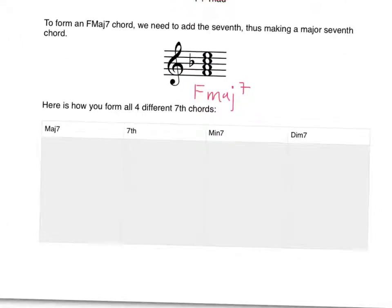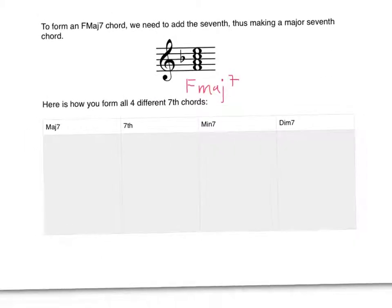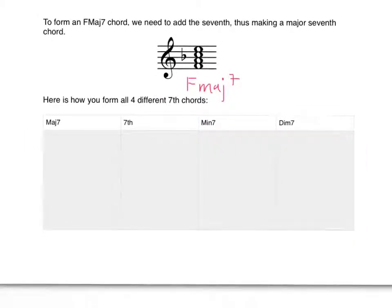There are four different seventh chords that we're talking about here. The first kind is the major seven, which is basically just the major triad. This one isn't called a major seven - this is called the seventh chord. So what you do here is you still have a major triad, and this time we're going to add a lowered seventh.